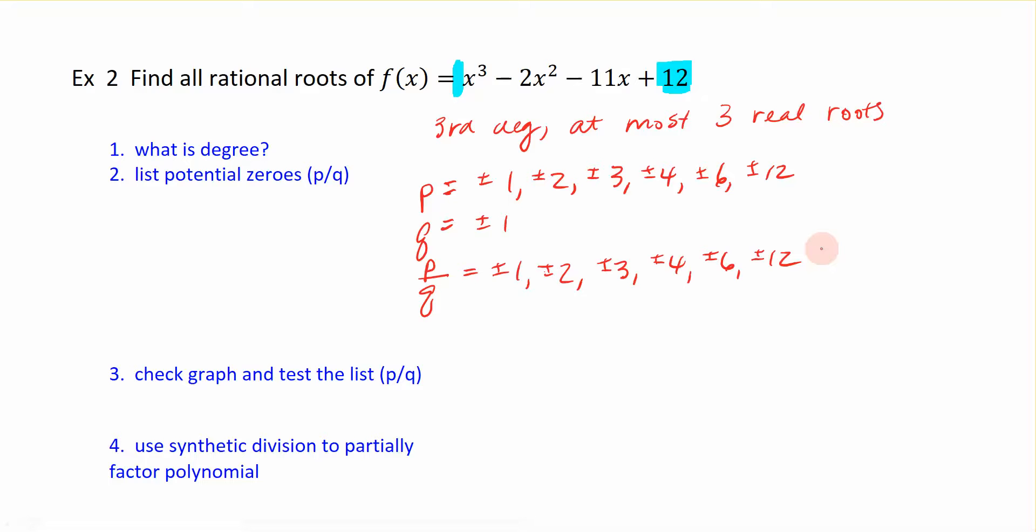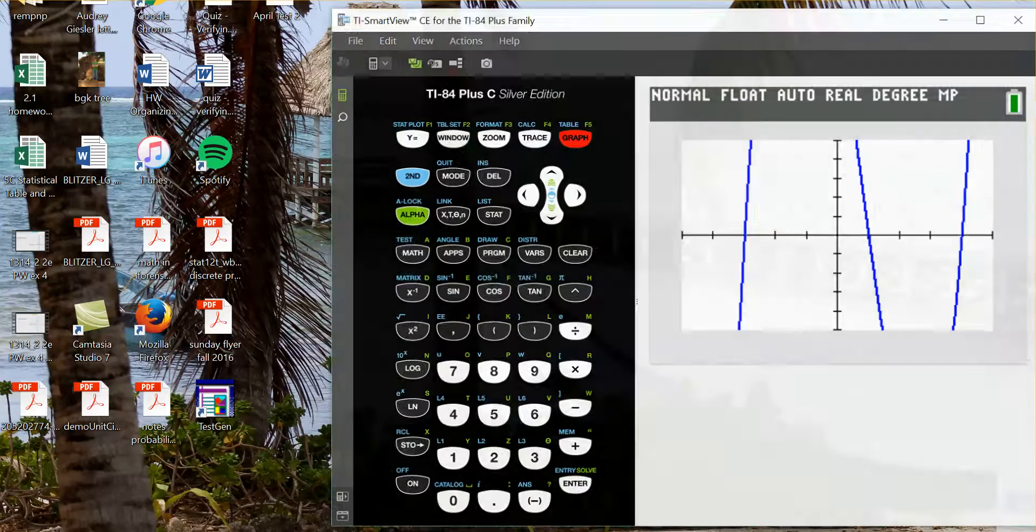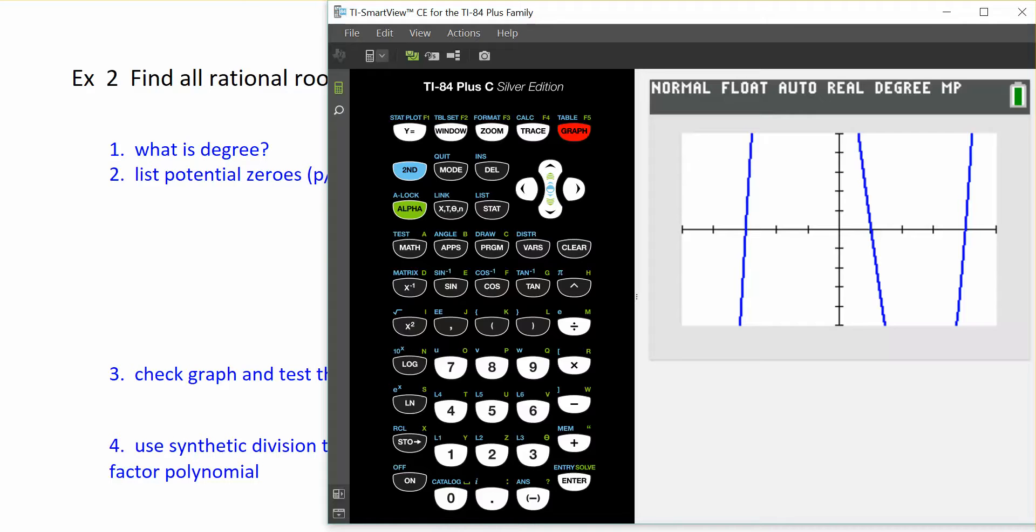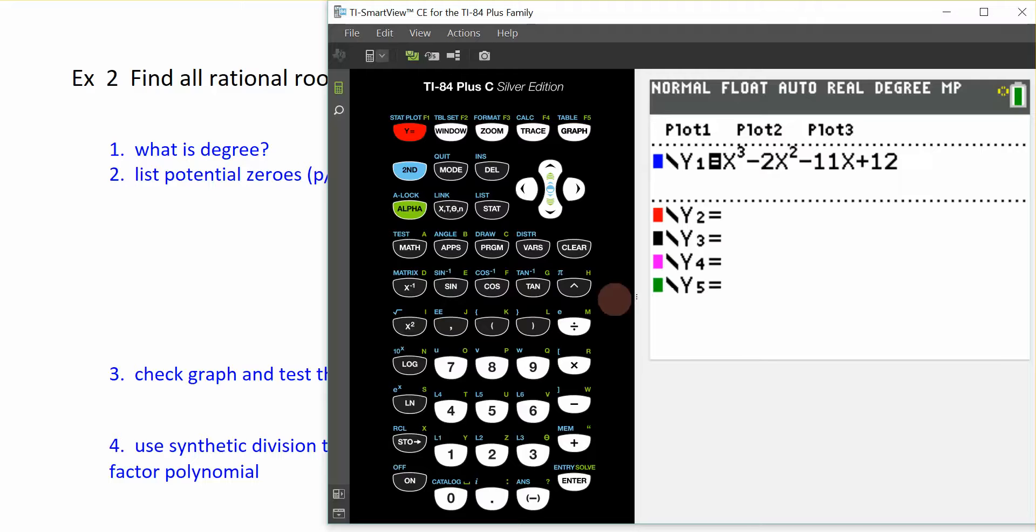What we're going to do instead is we're going to let the calculator evaluate the function values for me. So, I'm going to put this polynomial into the y equal portion of my calculator, which I have already done. Let me pull both of these up. You can see here that this right here is my polynomial function. It's on the y1 portion of my calculator.